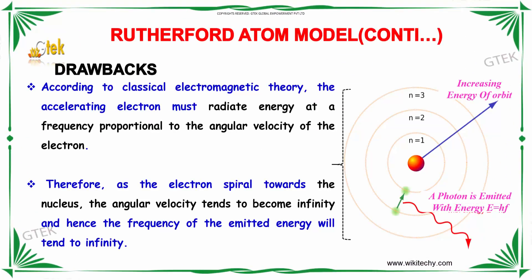Further, according to classical electromagnetic theory, the accelerating electrons must radiate energy at a frequency proportional to the angular velocity of the electron. Therefore, as the electrons spiral towards the nucleus, the angular velocity tends to become infinity, and hence the frequency of emitting energy will tend to infinity, which is impossible. That is another drawback of the Rutherford atom model.